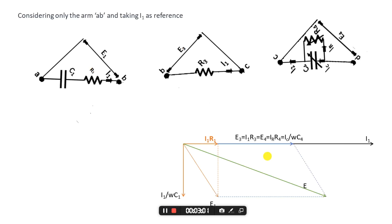Now, E3 is equal to E4. E4 is the voltage in the arm DC. In this arm DC, the capacitor and the resistor are in parallel with each other, and the total current in the arm DC is I2, so I2 = IC + IR, where IC is the current through the capacitor and IR is the current through the resistor. The voltage across both the capacitor and resistor will be the same, that is E4. So we can write E4 = IR × R4 = IC/(ωC4). Since E4 is along the x-axis, the current IR will also be along the x-axis.